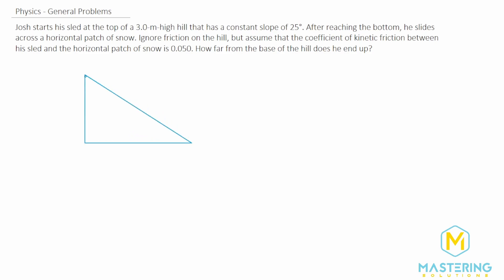So let's draw that real quick. We have our hill here and they say that it has a slope of 25 degrees. So we got our slope right here and then it says that after reaching the bottom he slides across a horizontal patch of snow and ignore friction on the hill but assume that the coefficient of kinetic friction between the sled and the horizontal patch of snow.